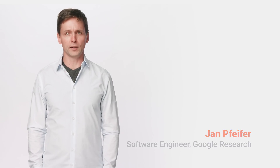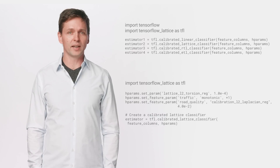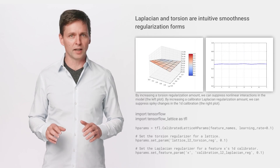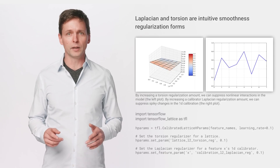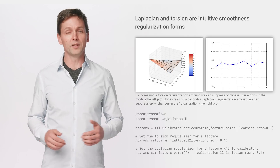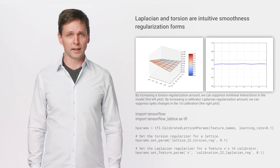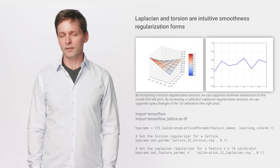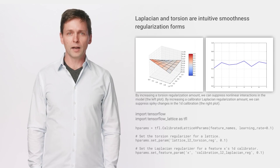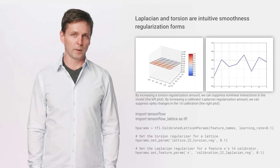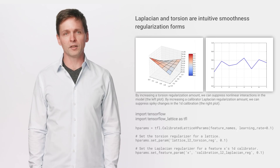In TensorFlow Lattice, we provide four TensorFlow estimators that are easy to use and fit different types and sizes of problems. We also provide a hyperparameters class that allows you to specify for each feature its monotonicity, smoothness regularization, and how to handle its missing value. Besides the usual L1 and L2 regularizers, lattice models also support graph-Laplacian and torsion regularizers, both of which can help your model generalize better to unexplored parts of your feature space and can be configured per feature with the hyperparameters class.